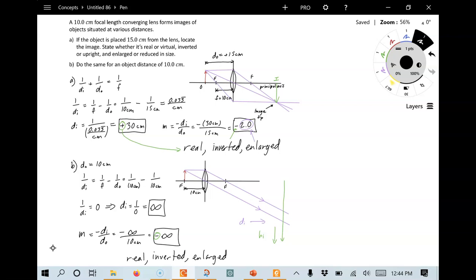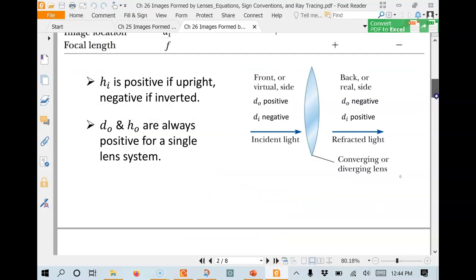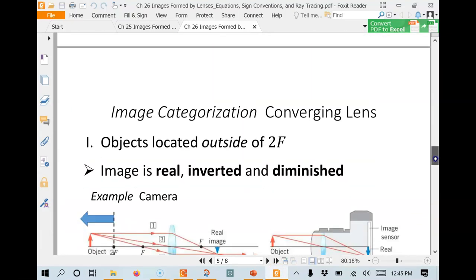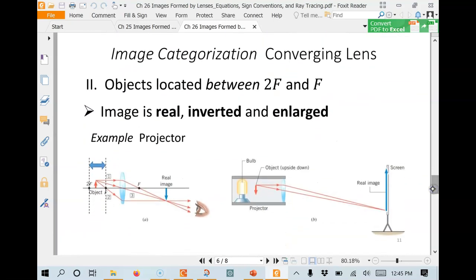Let's check in part A. We have the object. Here's the focal point. And two times the focal point is about here. So this object right here, this guy, is halfway. It's in between F and 2F. We said real, inverted, enlarged. Again, we can check this. We go back down to the characterizations for images. And if we look at converging lens, here's one that is between 2F and F. And we see that it is real, inverted, enlarged, exactly as we expected here.